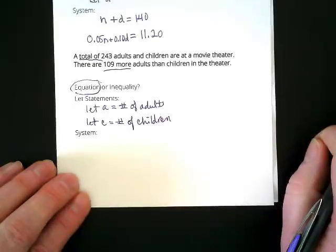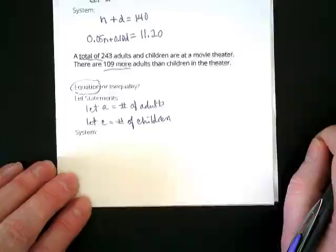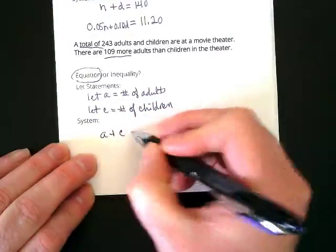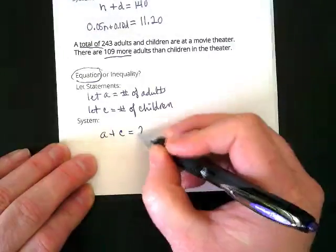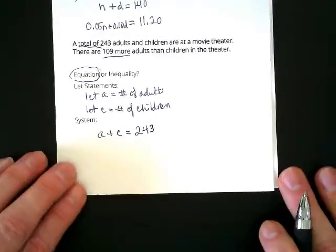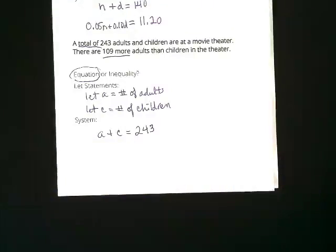Do you want to make a prediction on one of our equations? Go ahead, Junior. A plus C equals 243 plus 1.9. Nope, just the 243. A plus C, all the adults and children together, total 243.